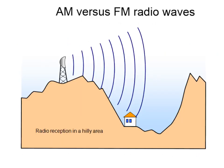Diffraction also affects radio reception. AM radio waves have longer wavelengths than FM radio waves. Because of that, the longer AM radio waves diffract around obstacles like buildings and mountains, while FM waves are shorter and don't diffract as much. As a result, AM reception is often better when you're in the mountains or around areas with a lot of barriers.